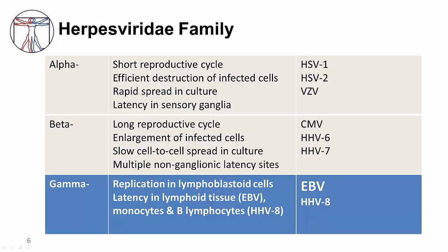The family Herpesviridae consists of three subtypes: the alpha, beta, and gamma herpes viruses. One of the hallmark features of the herpes viruses is their ability to maintain latency in particular cells in the body, and then potentially reactivate to cause different disease processes later. The alpha herpes viruses include the neurotropic viruses: herpes simplex virus 1, herpes simplex virus 2, and varicella zoster virus. These viruses have a short reproductive cycle, which means that they reproduce more quickly than other subfamilies of herpes viruses, and they establish latency in the sensory ganglia of nerve cells.